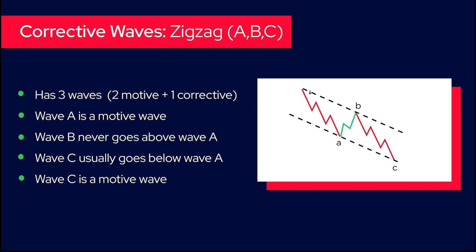Wave B never goes above wave A. This is a zigzag so the trend must be going lower. If B goes here and you have something like this, it's not going down anymore. Then it could be another corrective pattern but it wouldn't be a zigzag.